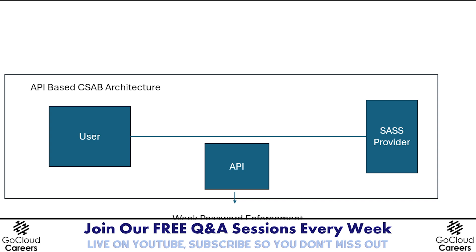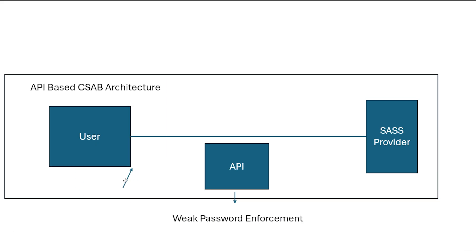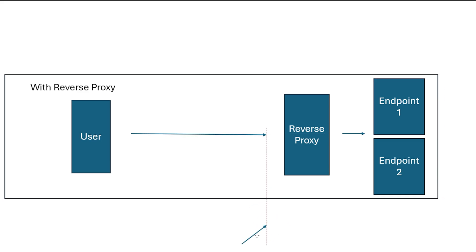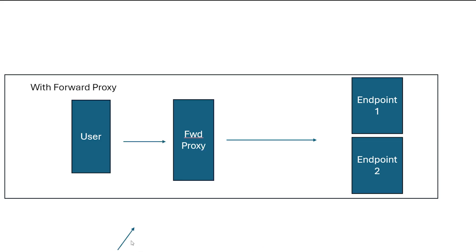After we get this information, we can say something's going on, identify a policy violation, and then our cloud access security broker can remove rights or sharing rights for that person and apply encryption going forward. What's good about this is there are no agents that need to be placed on users. But understand what you're giving up for that convenience: all this information is only as good as what we get from the API logs, so we're going to get after-the-fact, retrospective information. In contrast, if we've got a policy violation in real time, the reverse proxy or forward proxy can fix it because we're intercepting traffic before it gets there.